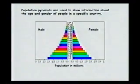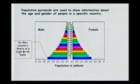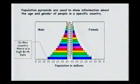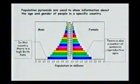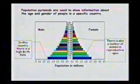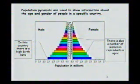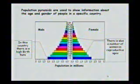Coming back to the typical pyramid of a developing country — it has a high birth rate, with more babies being added at the base. The numbers decrease going upward because of deaths. This population also has a large number of women in reproductive ages, from 15 to 49, meaning the population has high potential to reproduce itself.